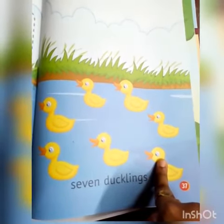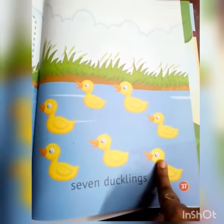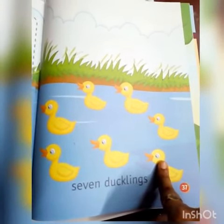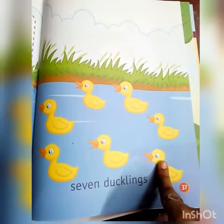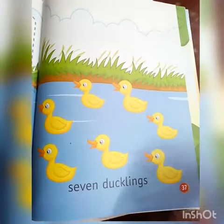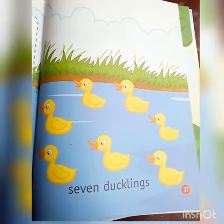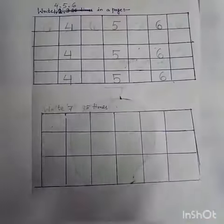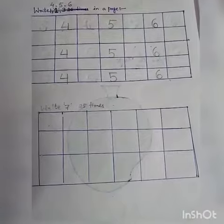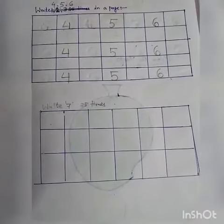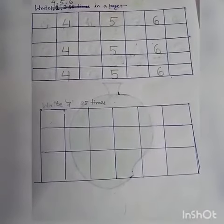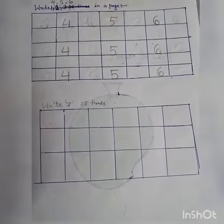7 ducklings. Now open your numbers copy and start your writing. Last day you wrote 4, 5, 6.